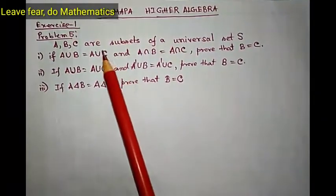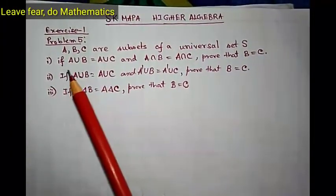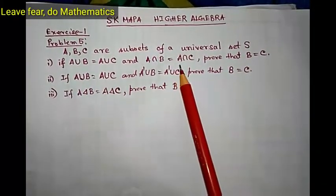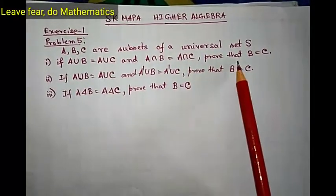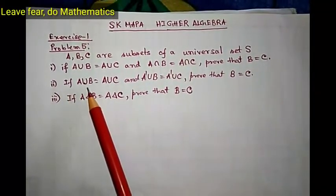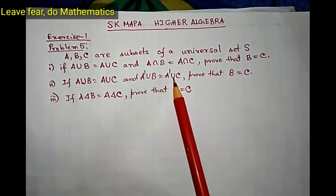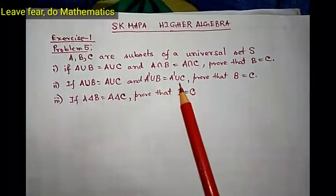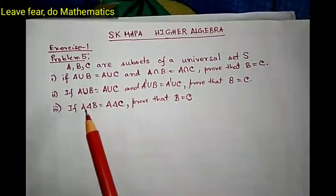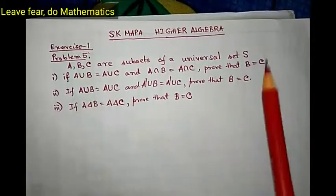The problem says: if A, B, C are subsets of a universal set S, then (1) if A union B equals A union C and A intersection B equals A intersection C, then prove that B equals C. Problem 2: if A union B equals A union C and A complement union B equals A complement union C — here dash stands for complement — prove that B equals C. Problem 3: if A symmetric difference B equals A symmetric difference C, then prove that B equals C.